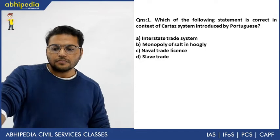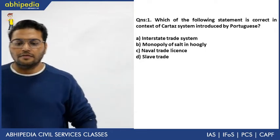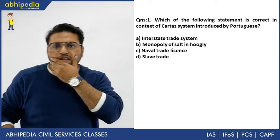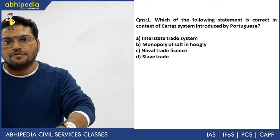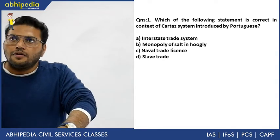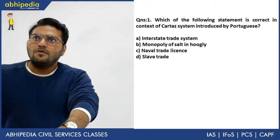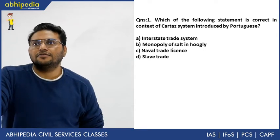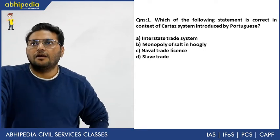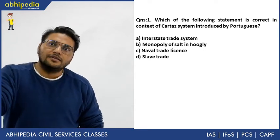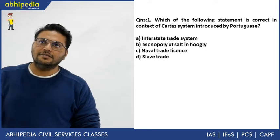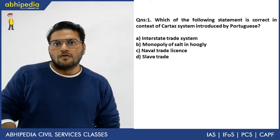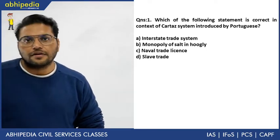The Carta system was introduced by the Portuguese. The options are: Interstate Trade System, Monopoly of Salt, Naval Trade License, and Slave Trade. The answer is Naval Trade License — they introduced a license system for naval trade.